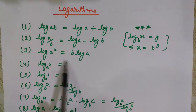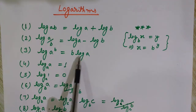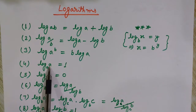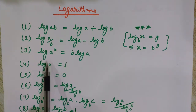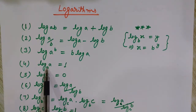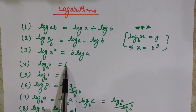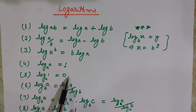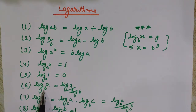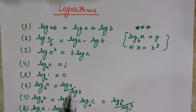Log of a to the base a is equals to 1 — it means if we want to find the log of some number that has the same base, then its value will be equal to 1. Log of 1 is always equals to zero. Log of a to the base b can be written as log of a divided by log of b.